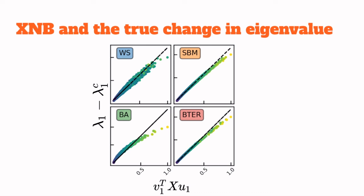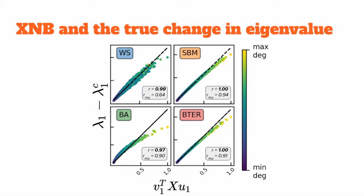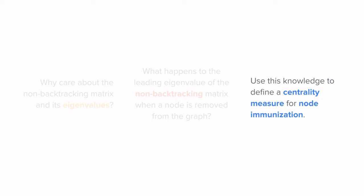Yes, the degree is also related to the change in the eigenvalue, but the correlation between XNB and the eigenvalue is much stronger, in some cases going up all the way to almost 1. So let's talk a little bit more about these centrality measures and see how they can be used for node immunization.